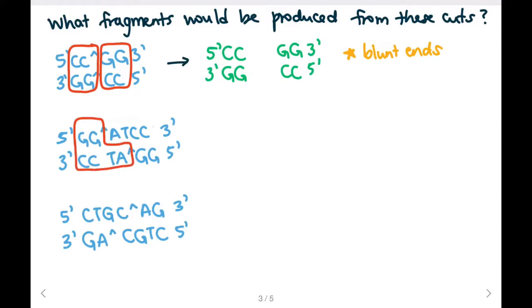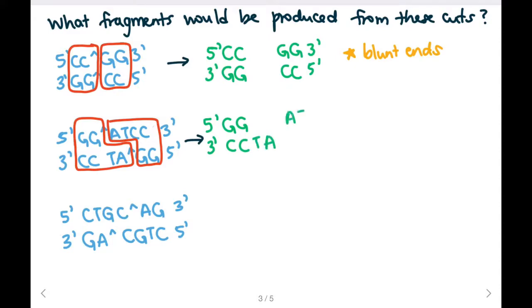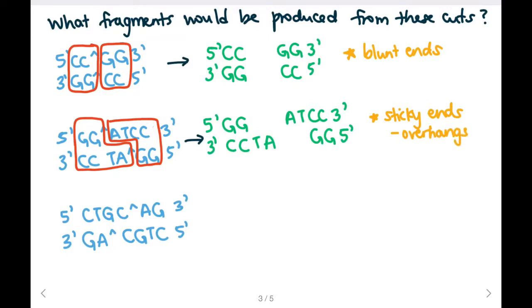In the second example, I'm going to follow the arrows to create the shape of the fragments. We get 5' G-G-3' and C-C-T-A. Similarly on the right we get another fragment. In this example, we have produced sticky ends — we have overhangs. When we combine this DNA sequence with another one, there are complementary overhangs that can ligate together.